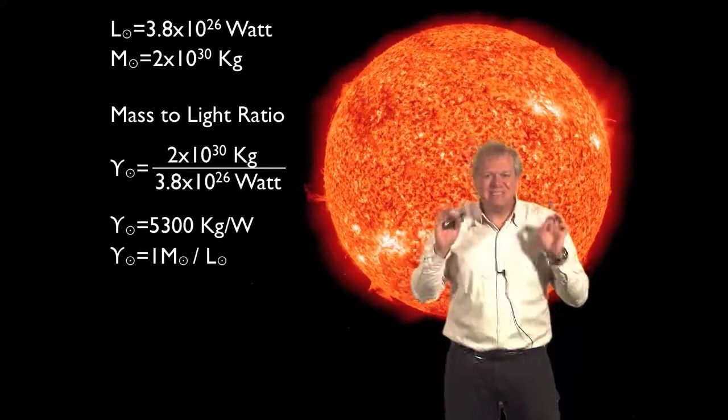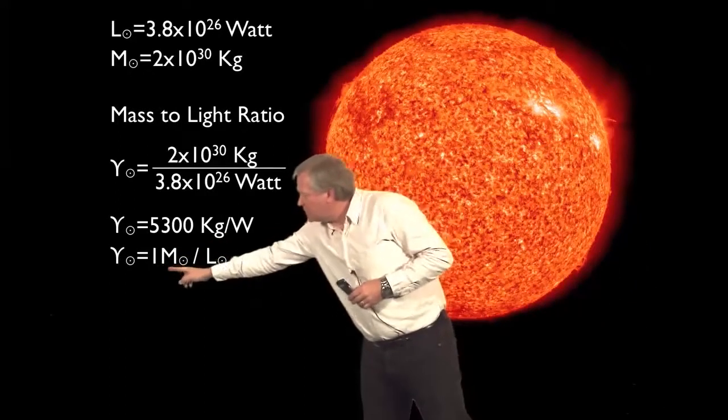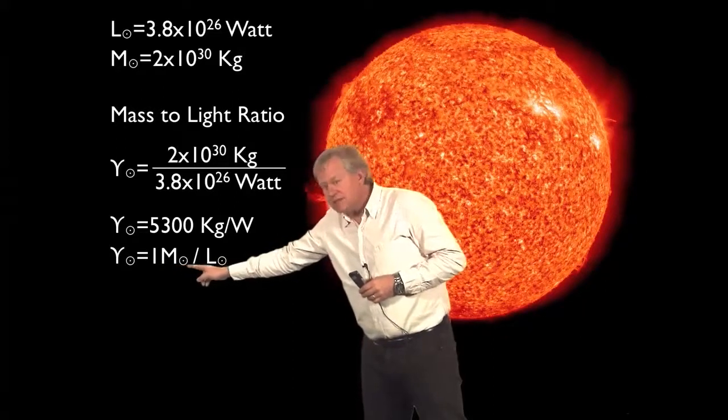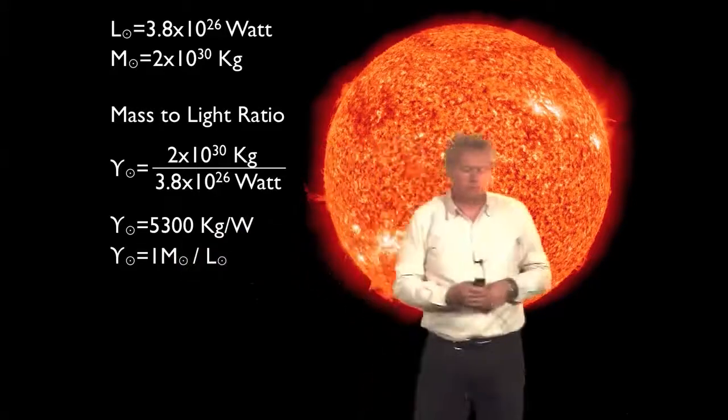To make this even simpler, we can define it as this mass to light ratio is one solar mass per solar luminosity. That's nice because that number is one for the sun.